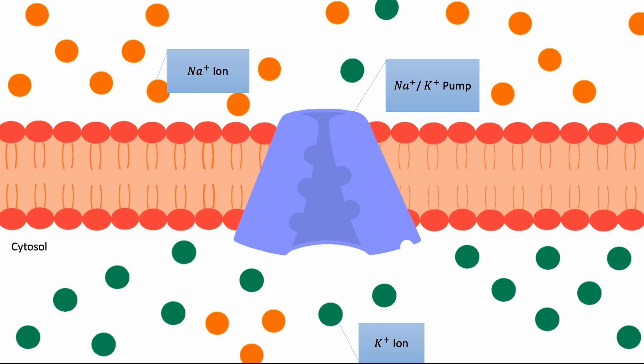This meticulous control is vital for maintaining optimal cell volume and enabling the generation of essential electrical signals in excitable cells.